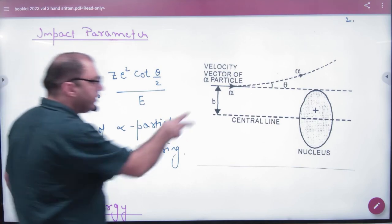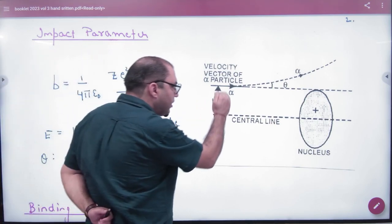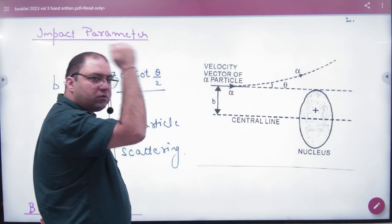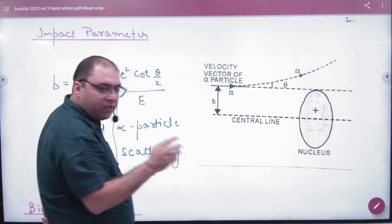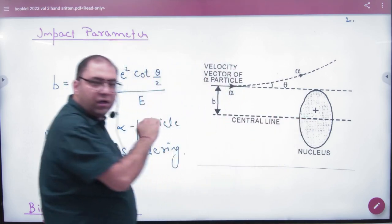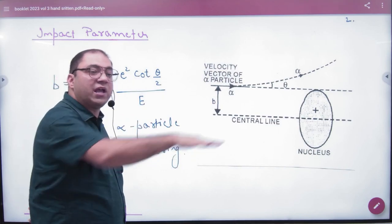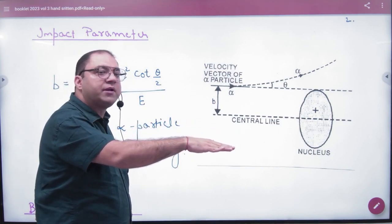From the center line, if we talk about the alpha particle on the center line, the impact parameter B is zero.